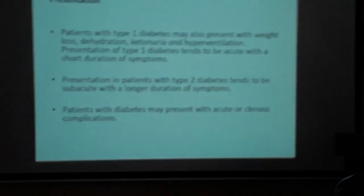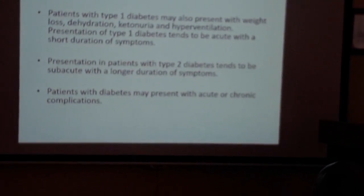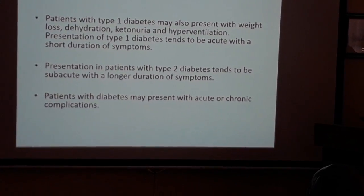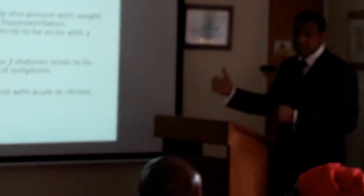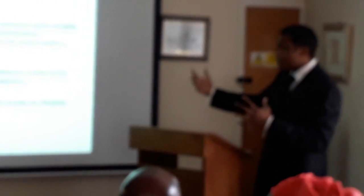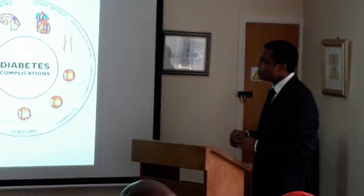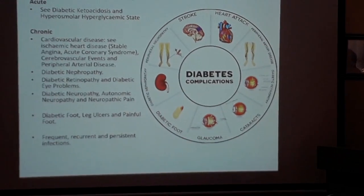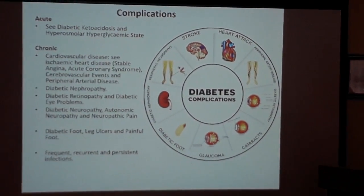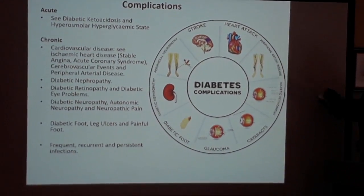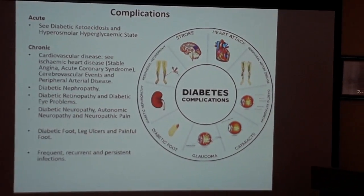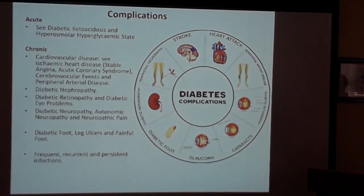Tingling and numbness in the fingers indicates nerve damage — the condition has progressed significantly. Some people don't present until they develop complications. The chronic complications include effects on the heart, the brain, and blood vessels. Instead of vessels being round and open, they become narrowed, reducing blood flow.